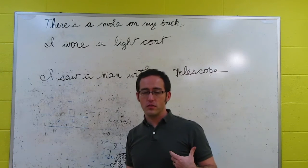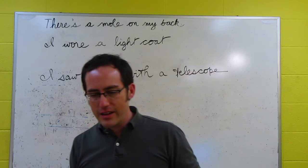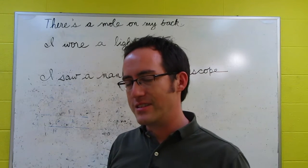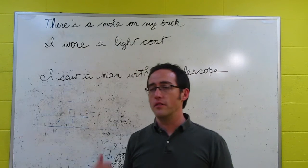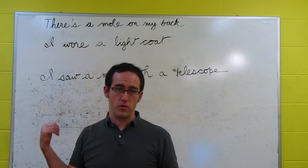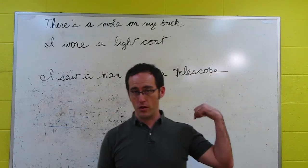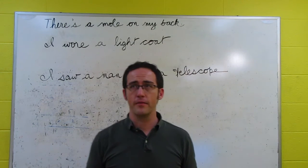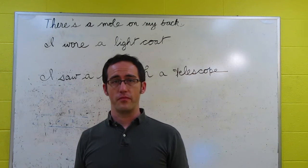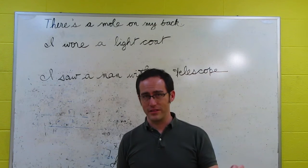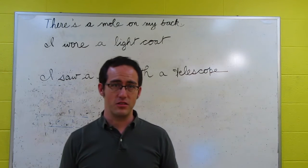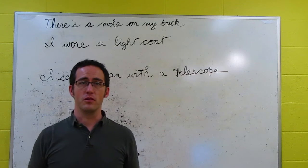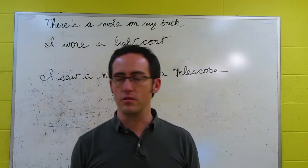Now, there can also be instances where the truth conditions don't necessarily disambiguate, but the context does. So if I have a spot on my back, a mole, and there's also the animal on my back, and I'm running around screaming, there's a mole on my back, then both of those are true. But only one of them is relevant to the situation. I don't really need you to get the spot off my back, I need you to get that mammal off my back. It's trying to burrow into me.